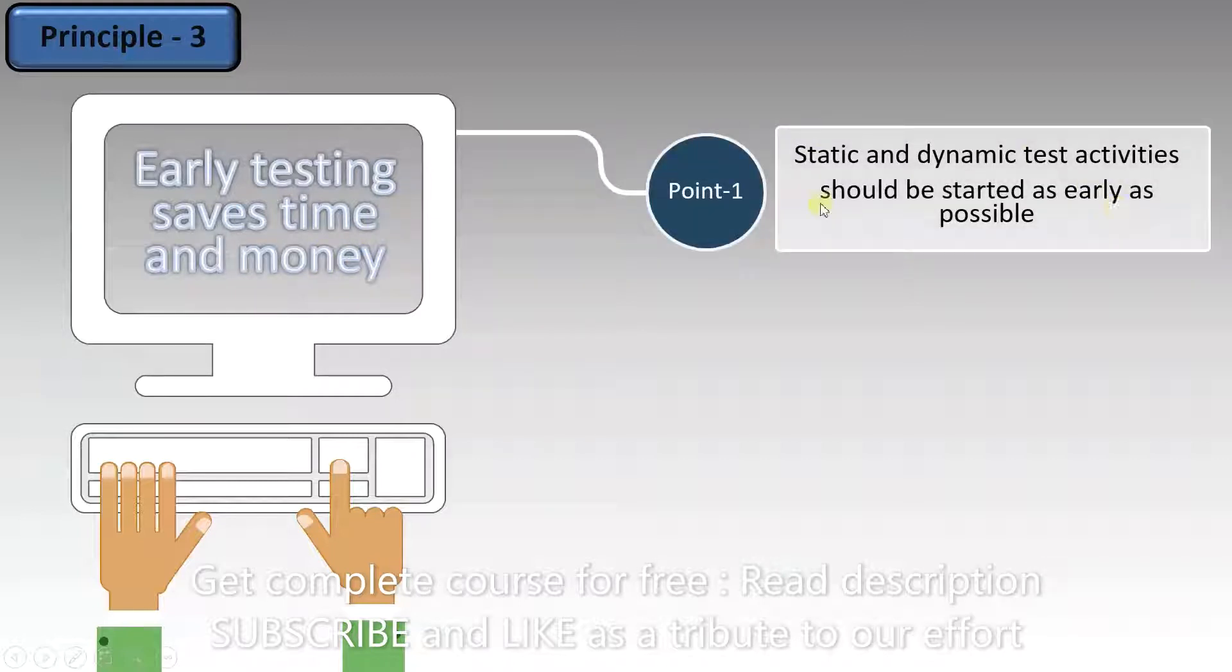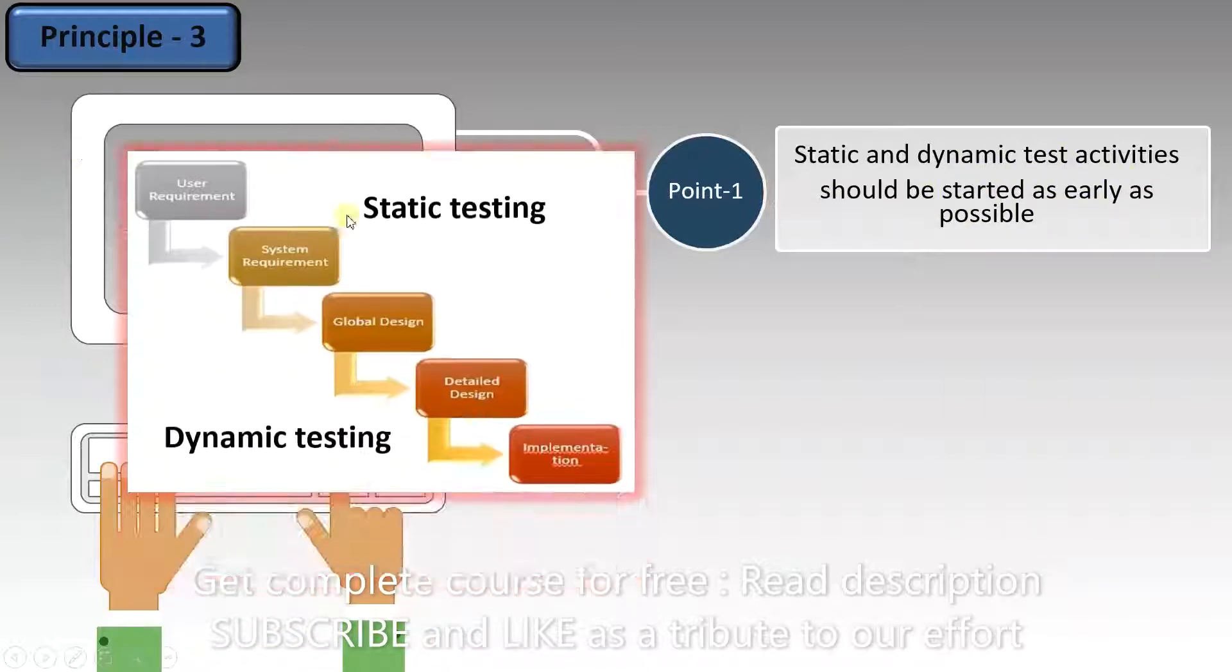The first point is that static and dynamic test activities should be started as early as possible. What does that mean? It means that we should start testing as early as possible, whether it is a static test or a dynamic test. Let's look at this diagram again. When we are at the user requirement or system requirement stage, there is no code to test, so we can't run the software, but we can start with static testing. And that's what we should do.